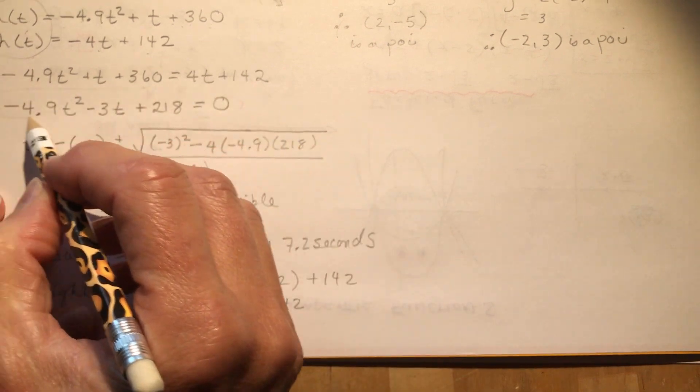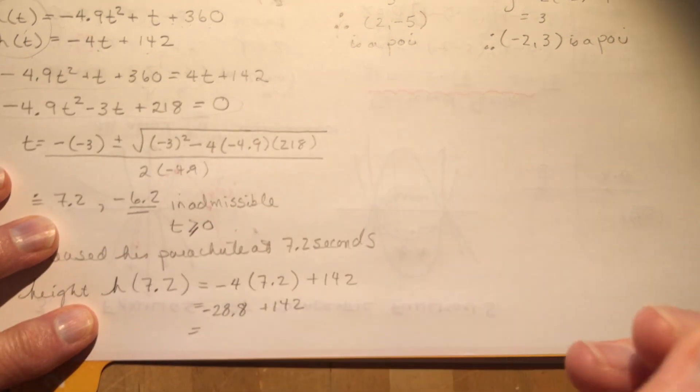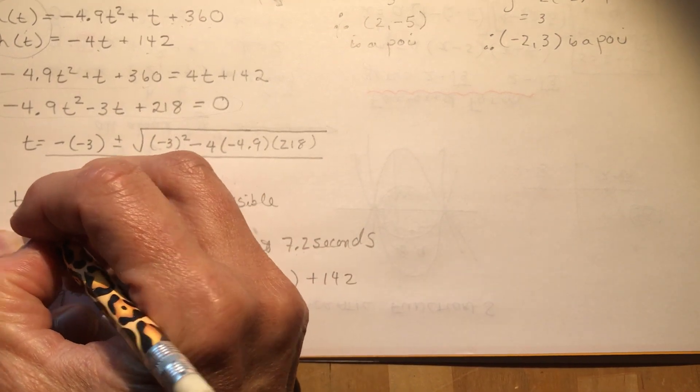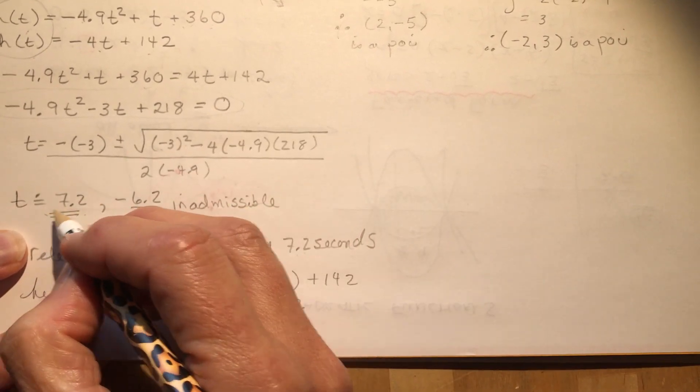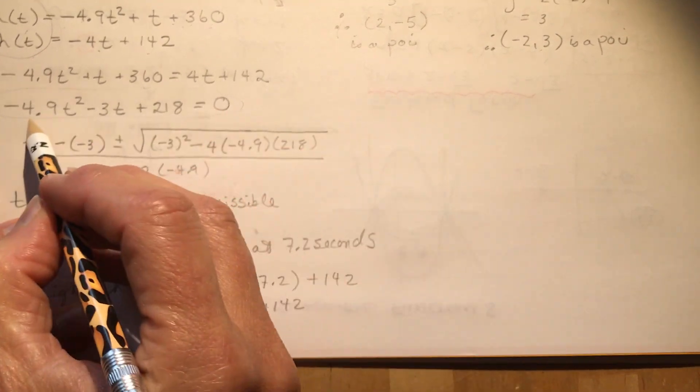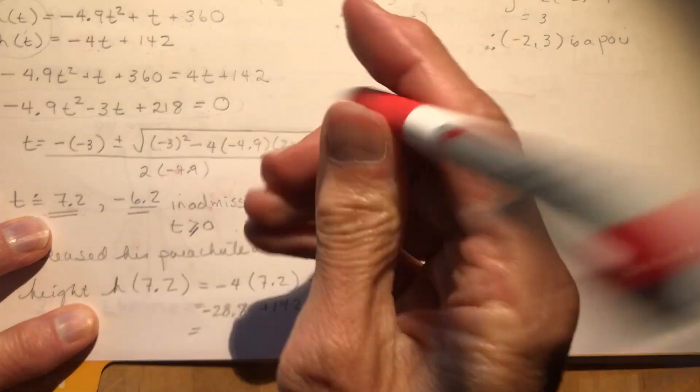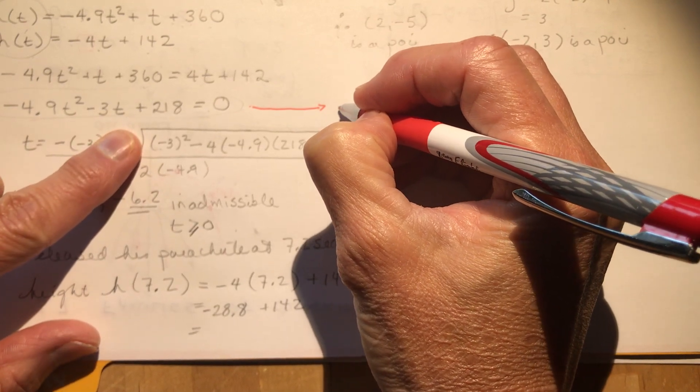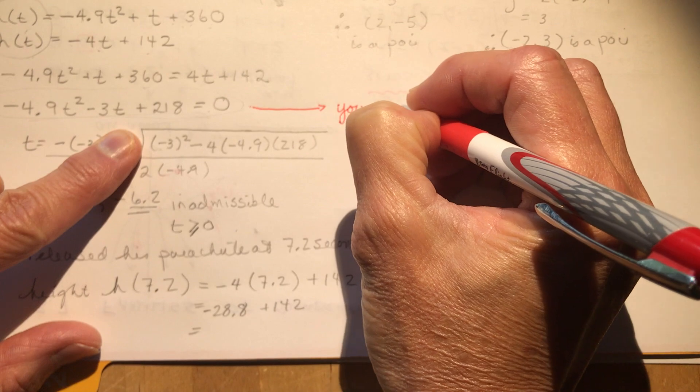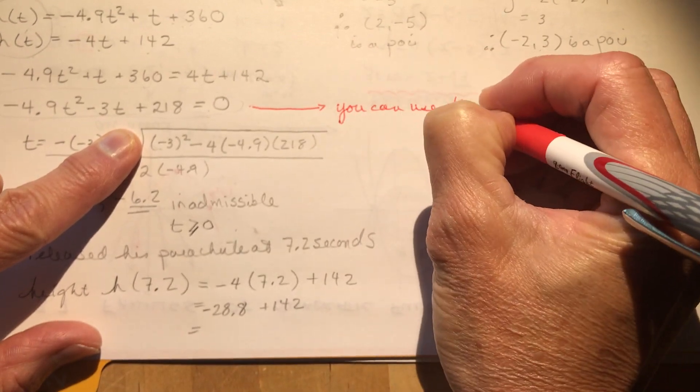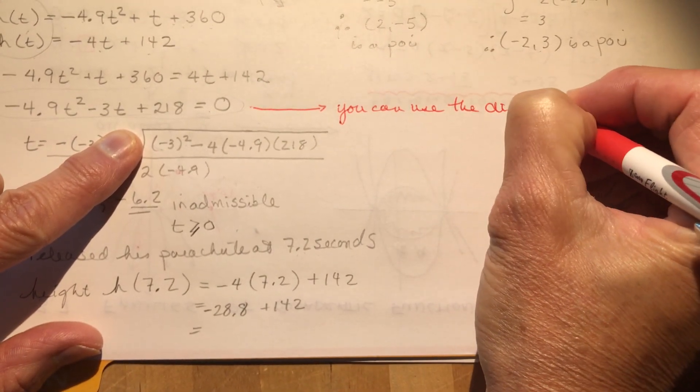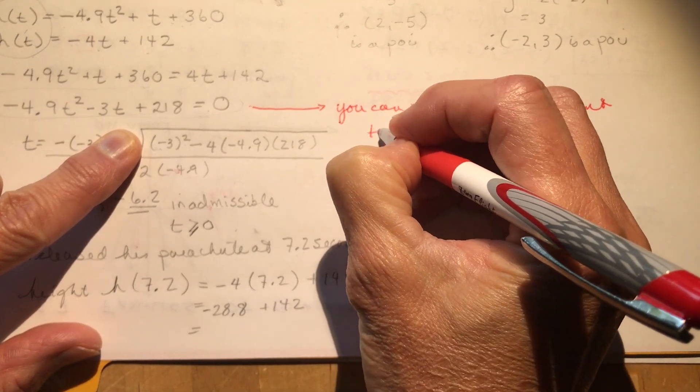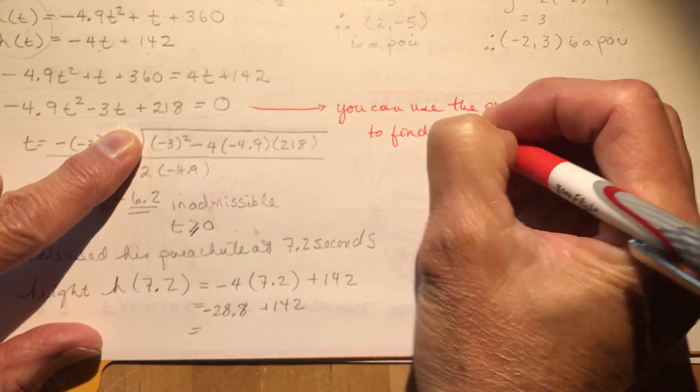Because it's a word problem, we can only have one solution and that's when time is positive. Okay, but there are two solutions. How would I know that from this equation? So once you have set equal to each other and brought everything to one side, you can use the discriminant. We just talked about that a couple of lessons ago. You can use the discriminant to find the number of solutions.